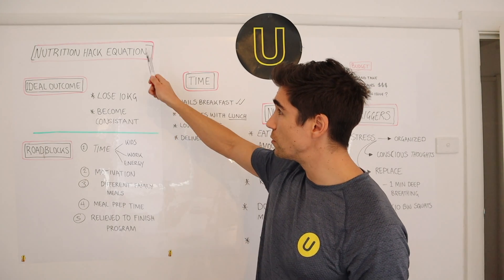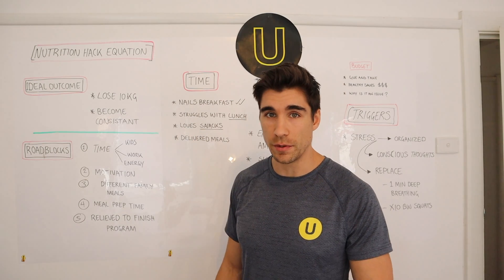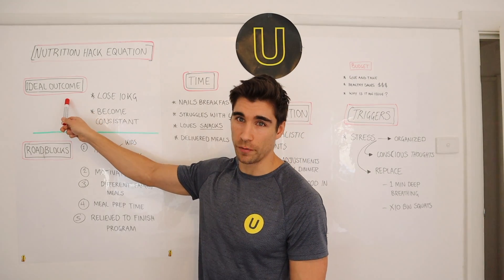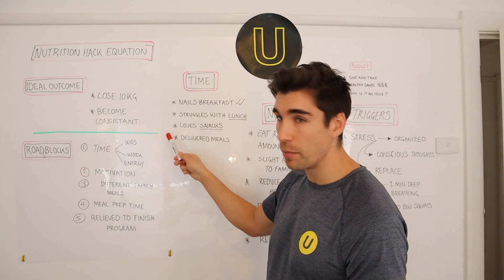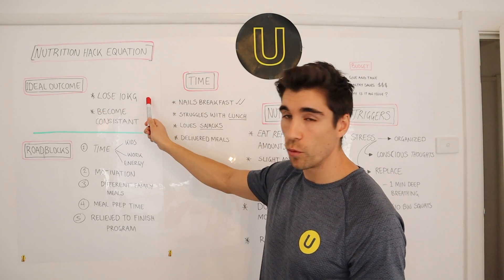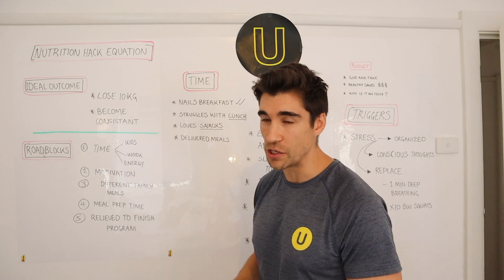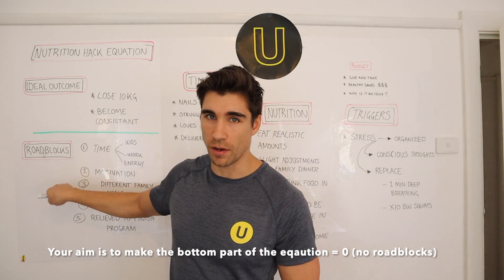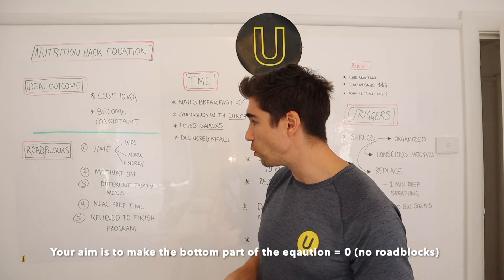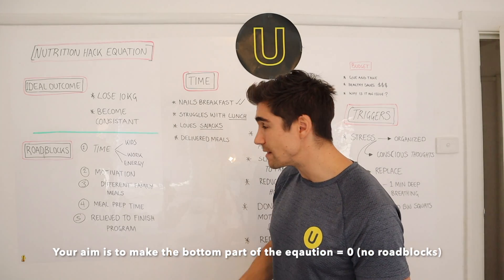So I'll start with the equation. We've just called it the nutrition hack equation, but typically in business it's called the value equation. Basically the ideal outcome is at the top of the equation — it's just a simple divide by — ideal outcome, so what you want to achieve, and then underneath in the bottom part of the equation are the roadblocks, everything that's causing friction and stopping you from getting to your goal.